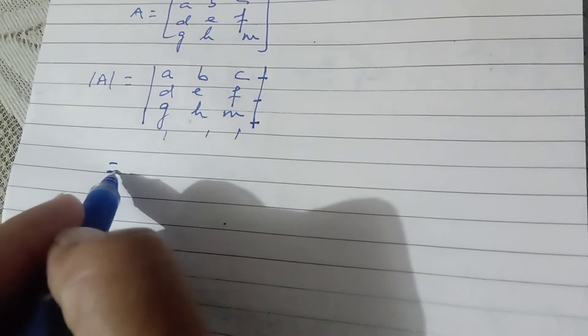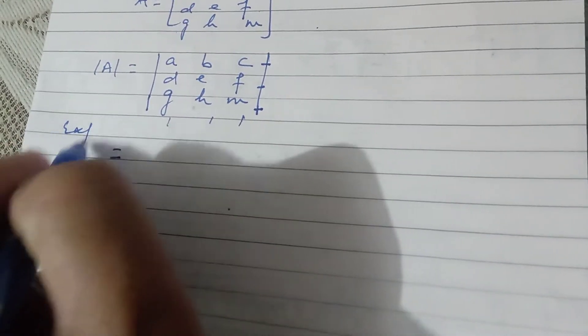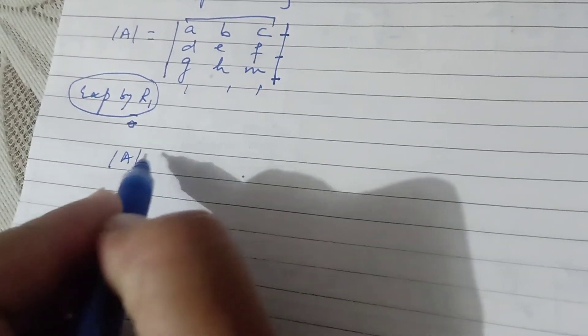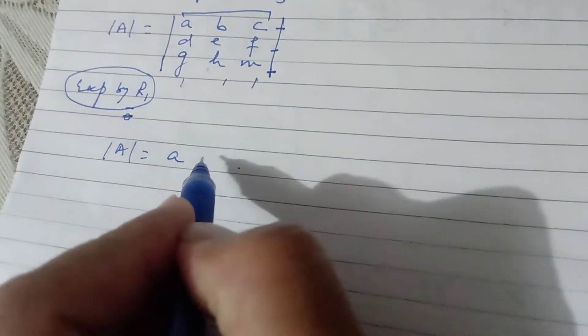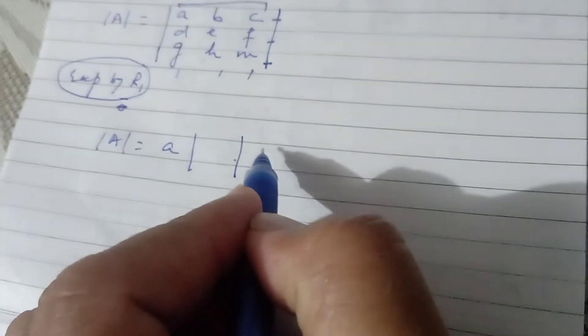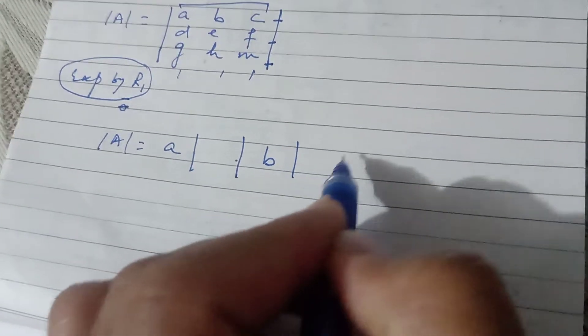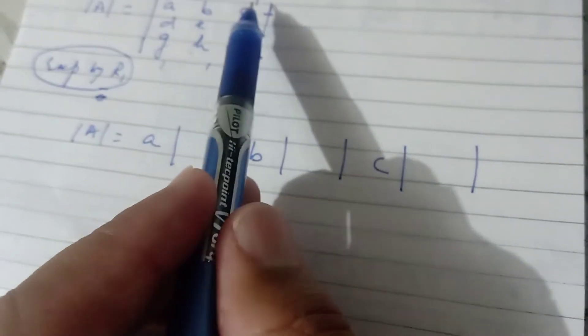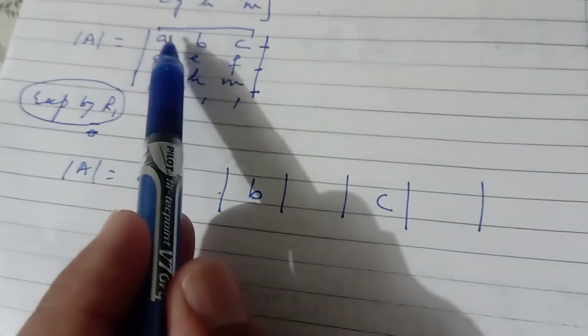So if I expand by Row 1, the first row contains A, B, and C. You write each element of the row or column you are expanding along, one by one. So you write the first entry, then there will be a 2x2 determinant, then the second entry of the row with another determinant, then the third entry with another determinant. Write all the entries of R1 in sequence — A, B, C — and after each entry leave space for its 2x2 determinant.